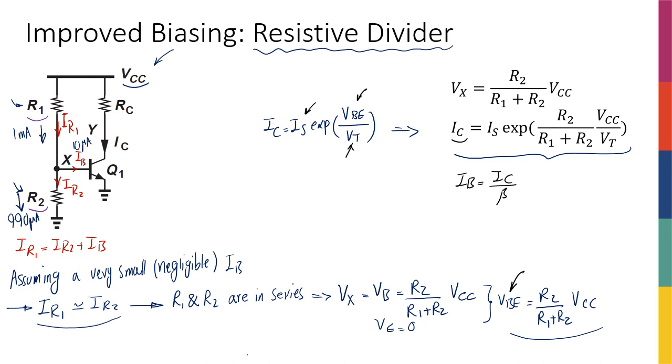and also the saturation of my transistor is also dependent on this Ic because this voltage across the resistor is going to be Rc times Ic. And that sets my collector emitter voltage that should be greater than 0.2 to make sure that I'm in the active region.